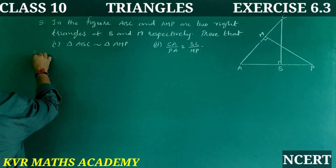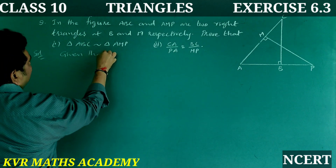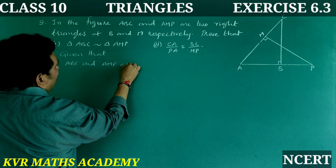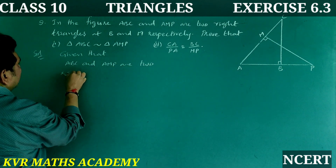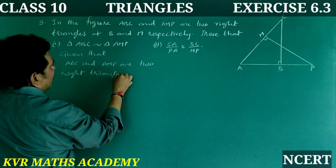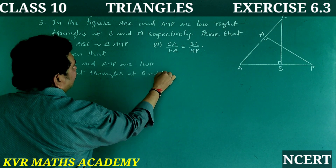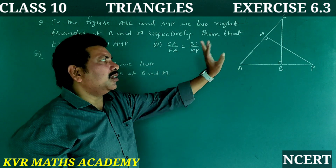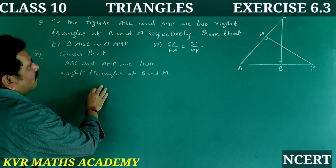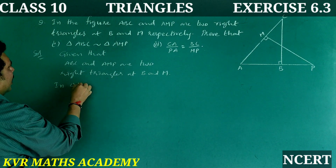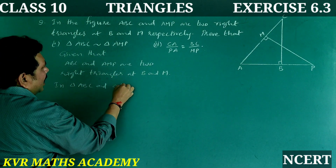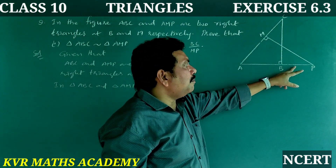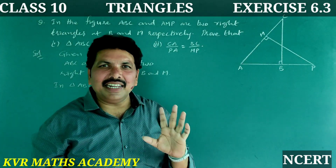Solution. Given that ABC and AMP are two right-angled triangles, right-angled at B and M respectively. Therefore, angle B = 90° and angle M = 90°. In triangle ABC and triangle AMP, angle ABC = angle AMP = 90° each.